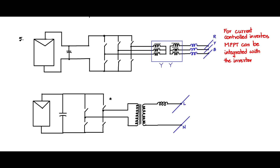For the three-phase case, the three-phase transformer is shown symbolically as a star-star connected transformer, but you can also use a star-delta connected transformer. When the grid is unbalanced or has harmonics, zero-sequence current components can circulate in a delta-connected winding. Therefore, sometimes the transformer is star-delta rather than star-star.